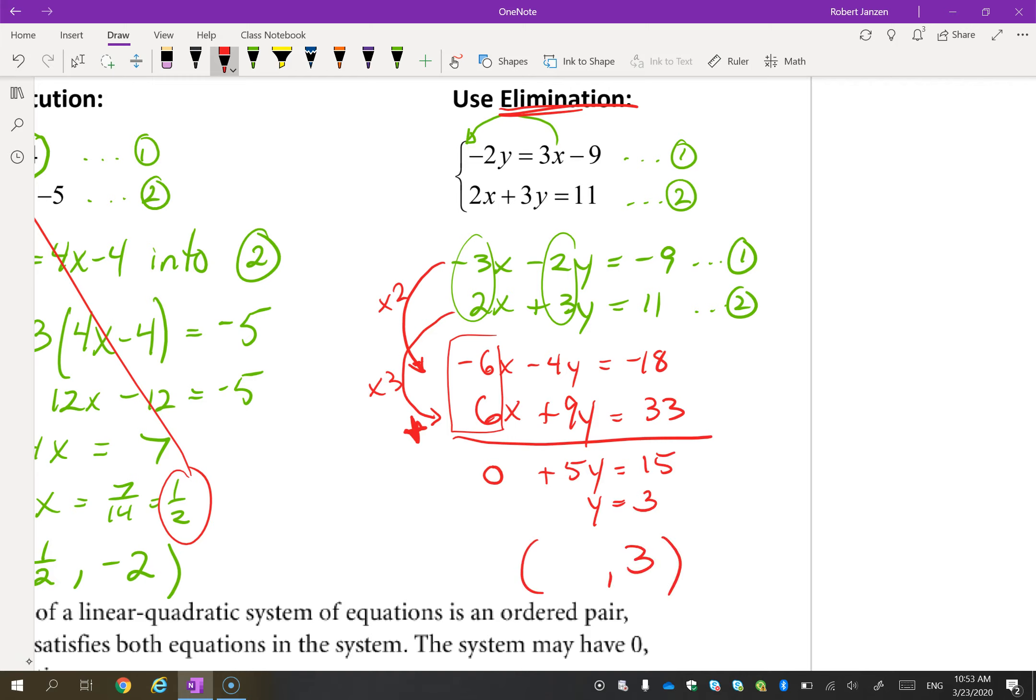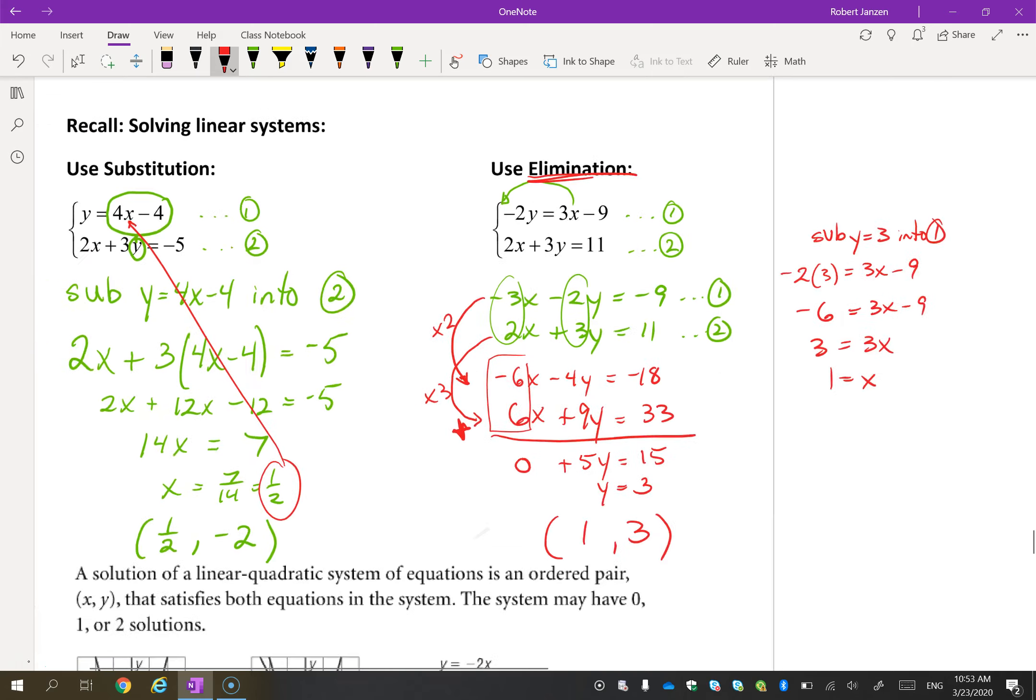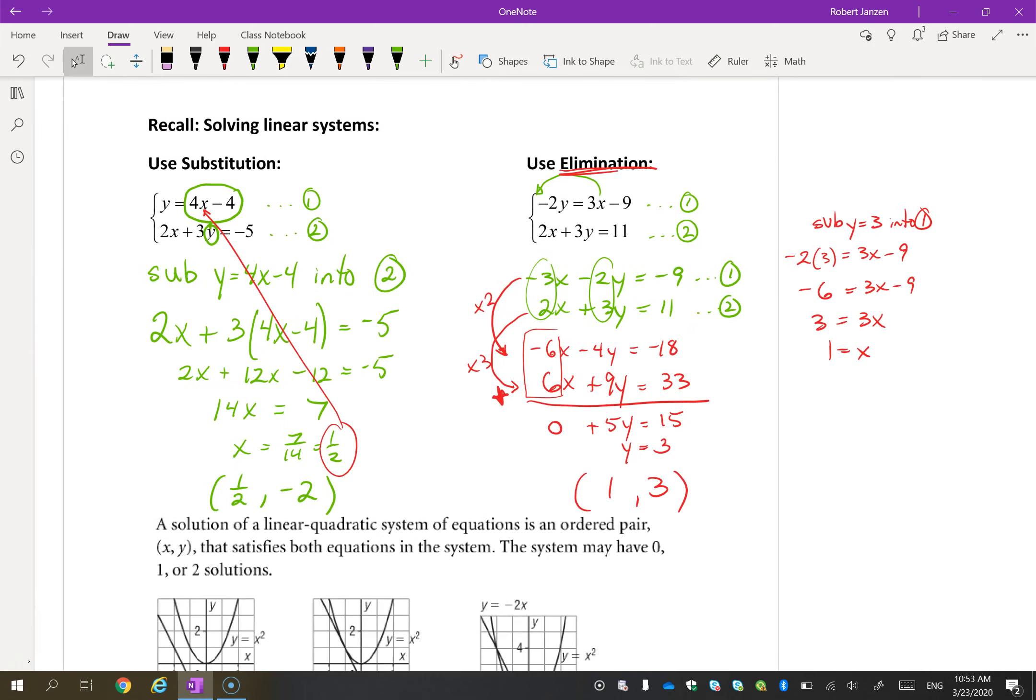So how do we get them eliminated? Because this is method elimination. I'm going to add. Negative 6x plus 6x is 0. This is going to be 5y and this is going to be 15. So y is 3. So then plugging 3 back into one of the equations. So let's sub y = 3 into equation one. So -2 times 3 = 3x - 9. And x is 1. So hopefully you remember those two methods. If you don't, rewind this video and try to watch it again.